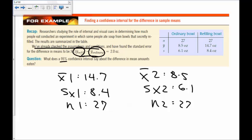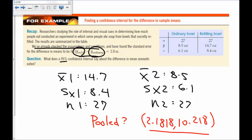We'll talk about that later on, what you do with that yes or no. But for now, I'll pick no, and hit calculate, and I find the confidence interval is 2.1818 comma 10.218. Then my conclusion in context is I'm 95% confident that when people have refillable bowls, they eat between 2.18 and 10.2 more ounces of soup. That is our conclusion in context.